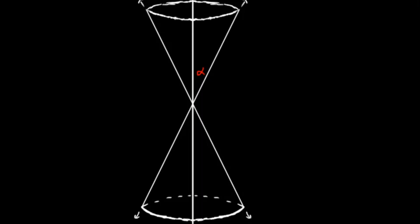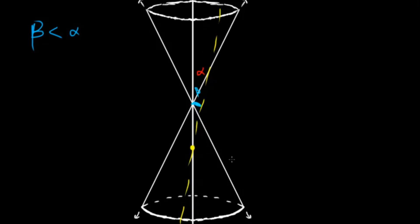The final scenario is when beta is less than alpha — when the angle that the plane makes with the original axis of symmetry is smaller than alpha. This is the first and only cross-section that actually hits both cones. In all the other examples — the circle, the ellipse, the parabola — we only sliced one cone. The hyperbola is the conic section that comes from slicing both cones.